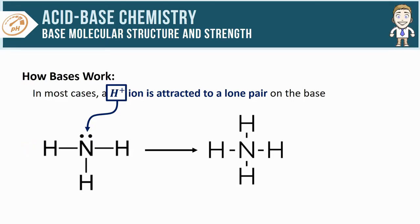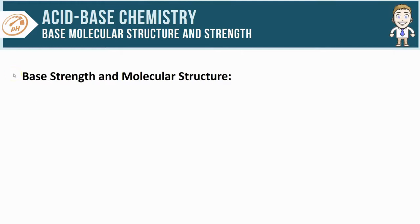The lone pair becomes a covalent bond that holds the hydrogen and nitrogen attached as we produce our conjugate acid NH4 plus. So this is what's happening when you write out the hydrolysis reaction for a base in water. That H plus that is gained from the H2O is attaching to a lone pair on the base molecule. Finally, we can get to how a base's molecular structure impacts its strength.